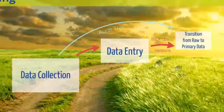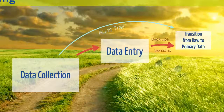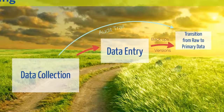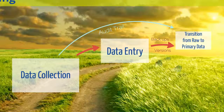You should start keeping an audit trail as soon as you formally start checking your data. This can be in the form of a document containing details of the checks that took place in the field and in the data entry. Once the data has been entered, it should include details of any corrections or changes to the data and how any outliers were dealt with. This document should be regularly updated until the final primary data set or data sets have been finalised.